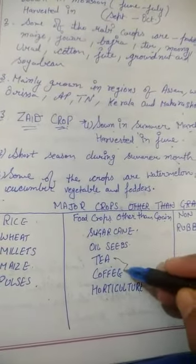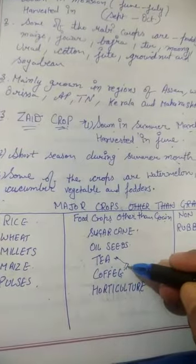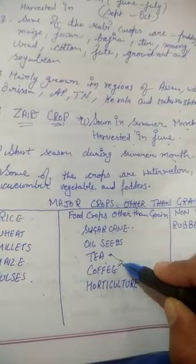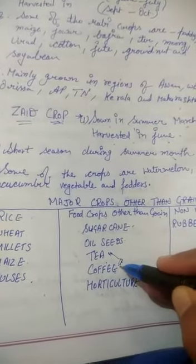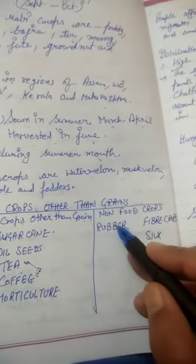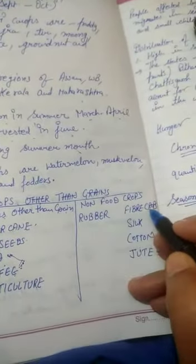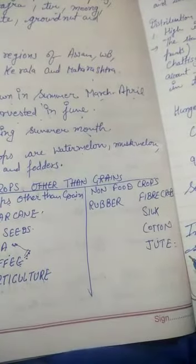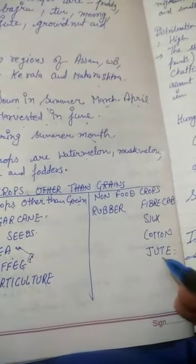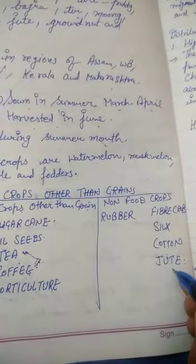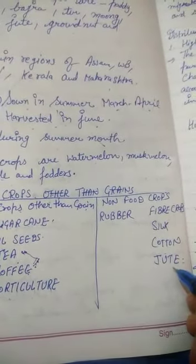Tea and coffee come under beverage crops. Non-food crops include rubber, and fiber crops such as silk, cotton, and jute. Jute is also called the golden fiber.